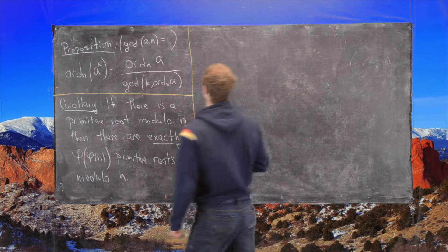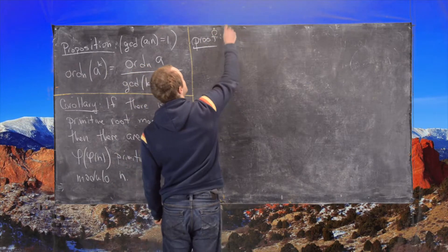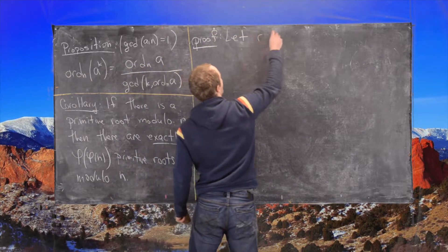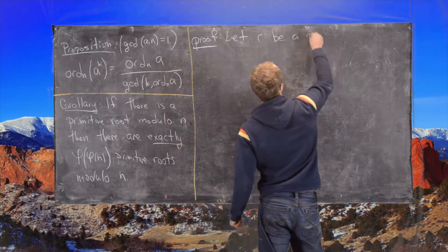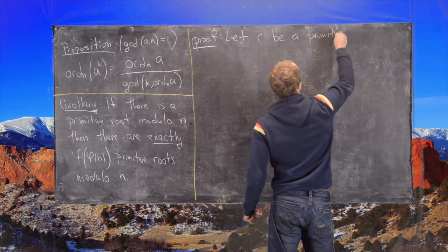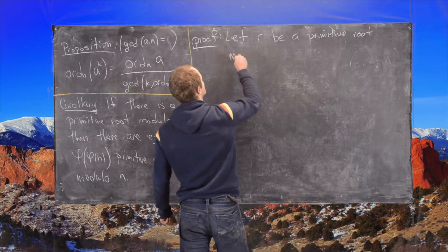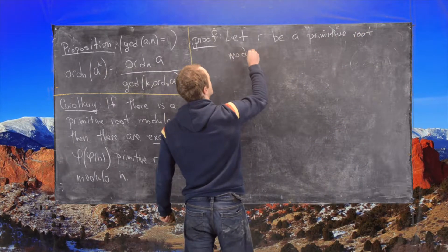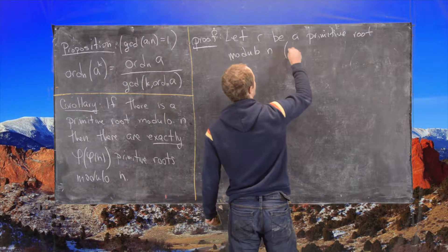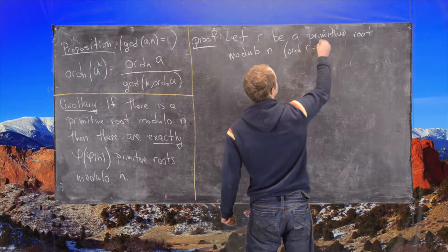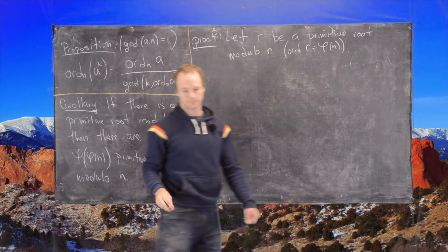Let's look at this proof. We'll let r be a primitive root modulo n. That tells us the order of r is equal to φ(n).